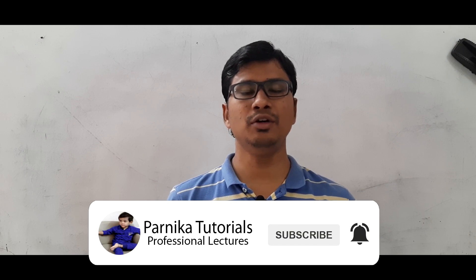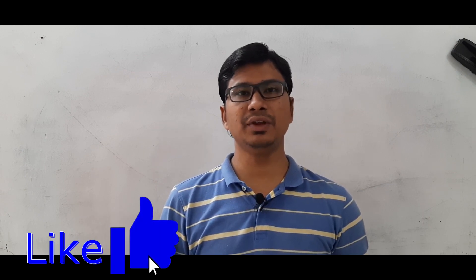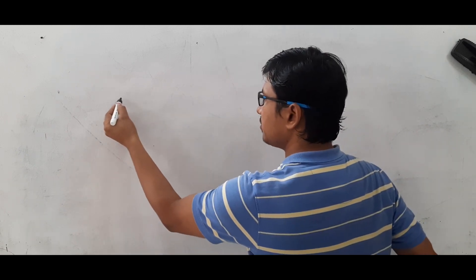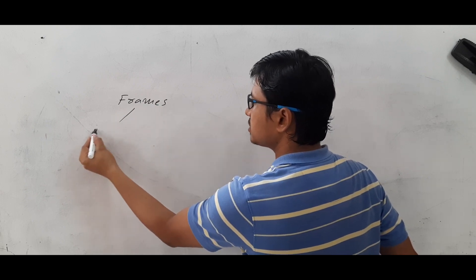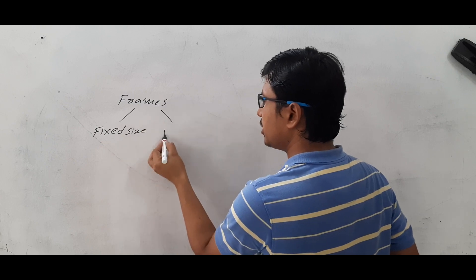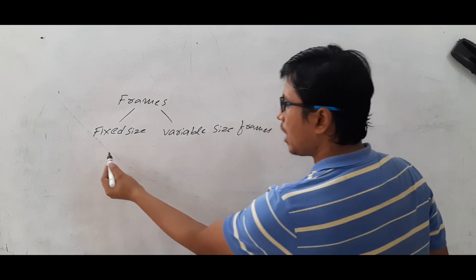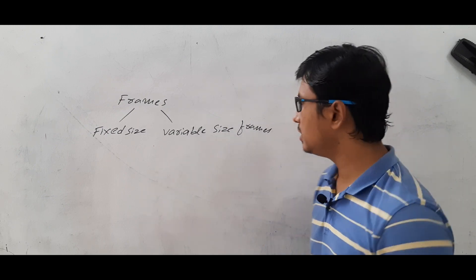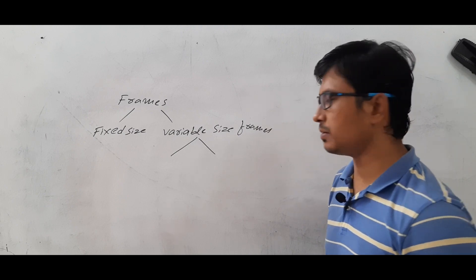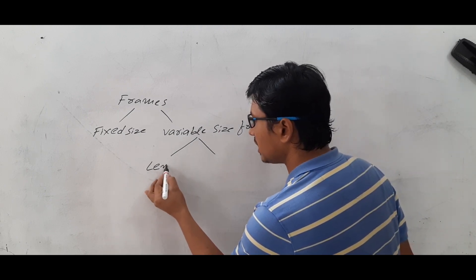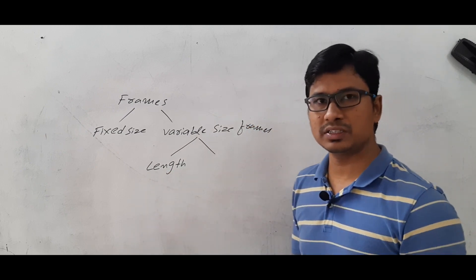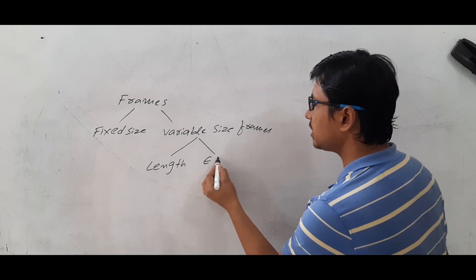Good morning friends. I request everyone to watch my videos in sequence for better understanding. In the last video, I discussed what framing is, what the need for a frame is, and how frames can be of fixed size or variable size. We discussed the drawbacks of fixed size frames and that variable size frames are of two types: one based on the length field, and one using the end delimiter.